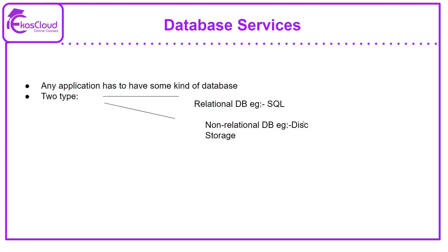Next is database services. Any application has to have some kind of database. The main types of database available are relational and non-relational. Relational databases have a primary key component to relate to data, so you can retrieve data by providing that primary key. For non-relational databases, there is no key component — it's like a folder on a desktop where you save images or music files. Relational databases are mostly organized in columns and rows where you can search by a certain criteria and pull out data.